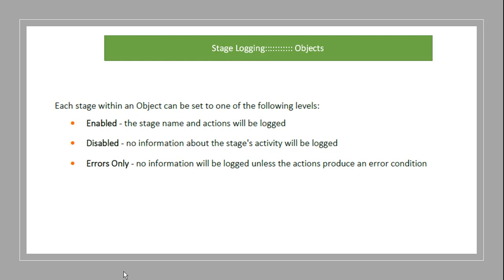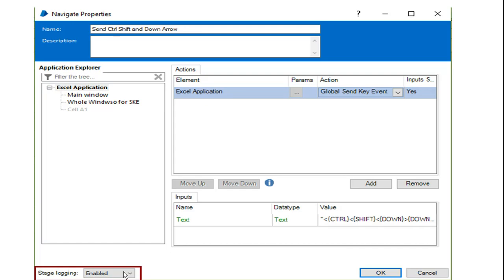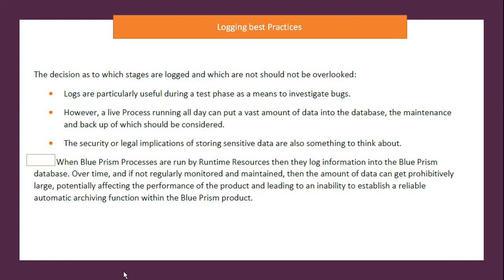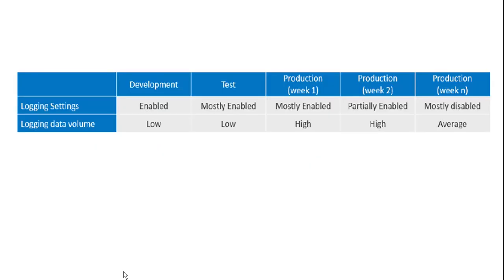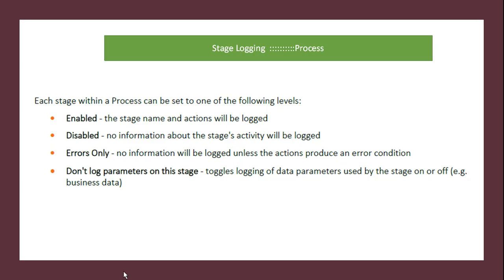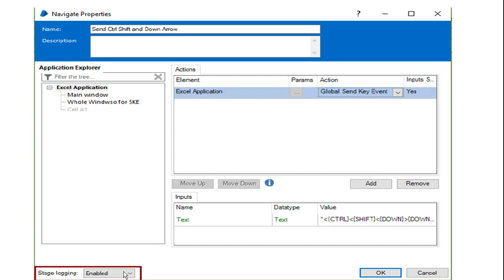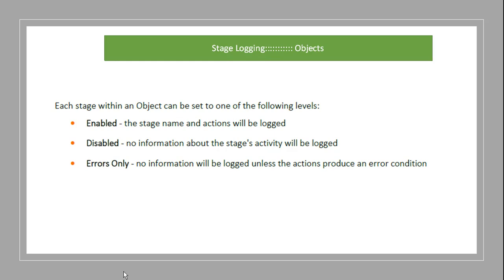When set to 'enabled' — which is the default — the stage name and action will be logged. The stage name could be navigate stage, read stage, or write stage, indicating which area the stage has gone through. The action refers to which action has been performed, such as the action of global send key event or a click action. So if 'enabled,' the stage name and action will be logged.